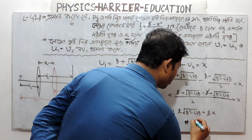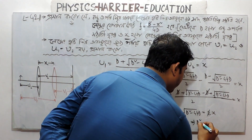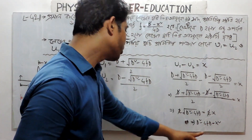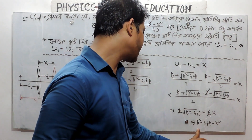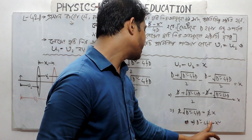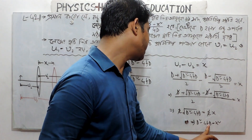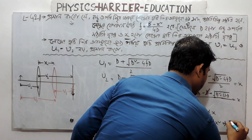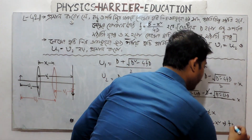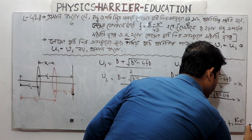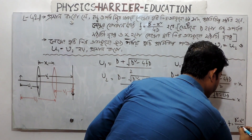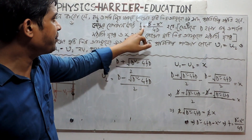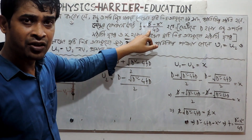Root over — d square minus 4fd equals to x square. So, d square minus 4fd equals x square. Rearranging: 4fd equals d square minus x square, divide both sides by 4d. Therefore f equals d square minus x square divided by 4d.